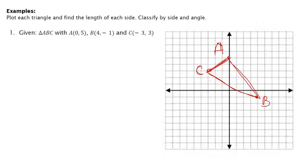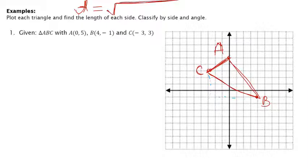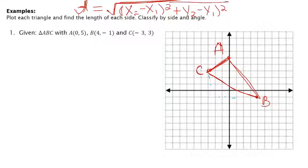To find the length of each side, we can use Pythagorean Theorem, but it can get a little tricky with lots of sides. Another option is the distance formula, which is essentially just Pythagorean Theorem. You subtract the x-values, subtract the y-values, square them, add them, and take the square root. It's really just identifying which two points you want to find the distance between.